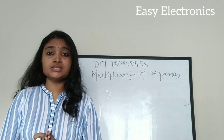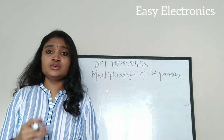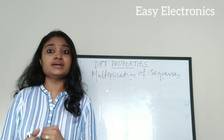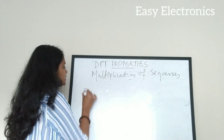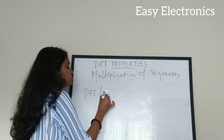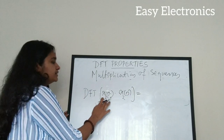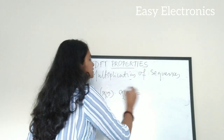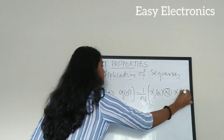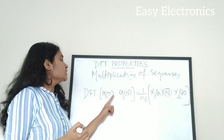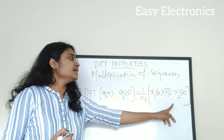The next property is the multiplication of sequences property, which is also very important and frequently asked in university questions. It can be used to find the DFT or solve problems easily. This property states that the DFT of x1(n) multiplied by x2(n) equals (1/N) times the circular convolution of X1(k) and X2(k).